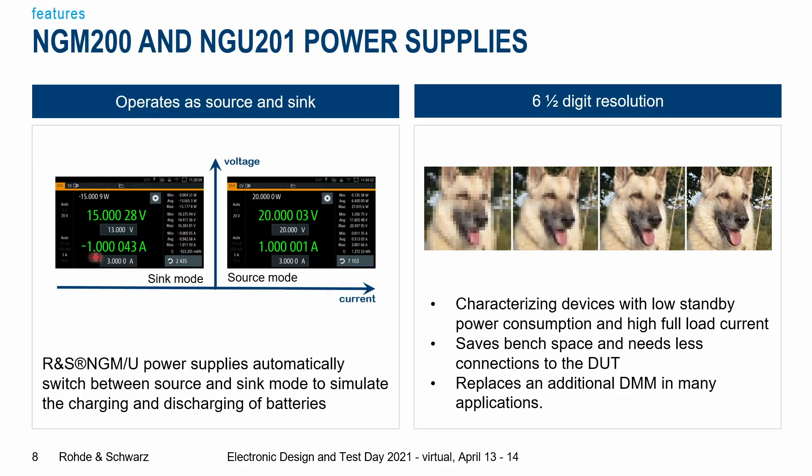The next point I want to talk about is source and sink operation. Usually a power supply is only there for sourcing — operating in one quadrant. But with the NGM and NGU power supplies you get a two-quadrant operation, which means you can also sink current. This is very important when simulating rechargeable batteries because you need to simulate both charging and discharging. The NGM and NGU do that automatically; once you go into sink mode, you will see a little minus appearing. You can also set them to sink-only mode or source-only mode.